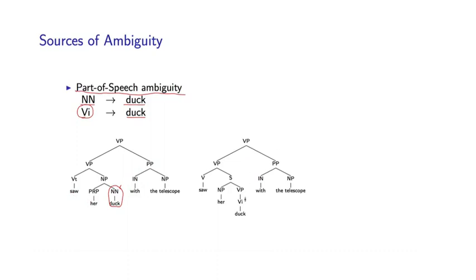Let's look at this second structure. In this case, we have duck as an intransitive verb, and actually we have her duck as a sentence embedded within this verb phrase. It's in fact, the sentence is an argument to the verb saw, forming a VP here. This interpretation basically corresponds to the interpretation where I'm seeing somebody duck using the telescope to see that person duck.